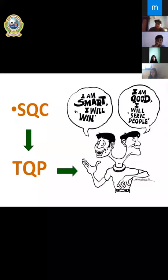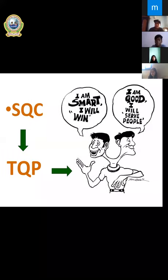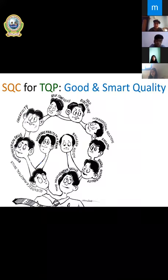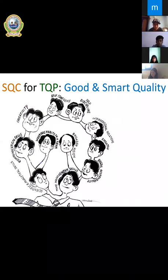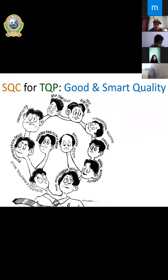The two types of characters — smart and good — can be further elaborated into 11 heads. These are all the characters that students have to acquire and inculcate. Some are smart characters and some are good characters — you can see each character represented in each head: creativity, self-confidence, self-discipline, broader vision. These are strengths students can acquire when they involve themselves in SQC activities.